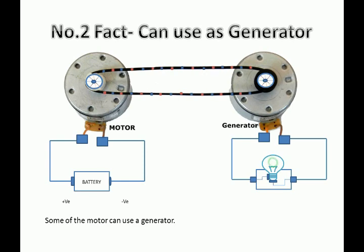Second, motor can be used as a generator. I am going to show this with a simple example. For this experiment, take two permanent magnet DC motors, one rubber band, one LED bulb and a three volt battery. Let's go into the experiment.